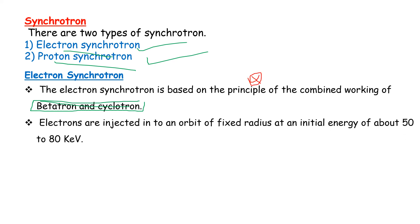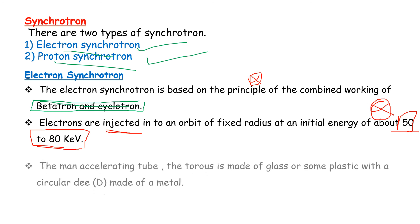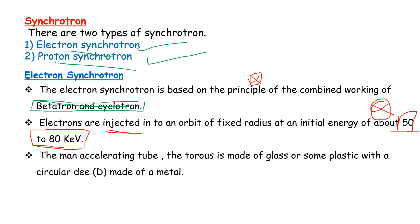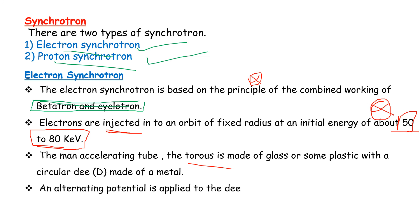The main accelerating tube is called the torus. The torus is made of glass or some plastic with a circular D made of metal. An alternating potential is applied to the D.